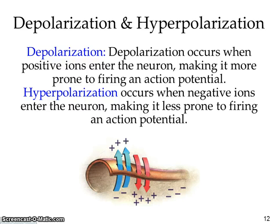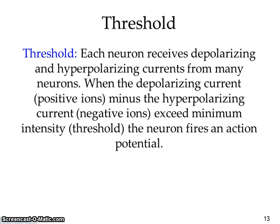Hyperpolarization is when negative ions enter the neuron, making it less prone to firing. Even though we think of 'hyper' as always ready to go, in this case it's the opposite — hyperpolarization means the neuron is less likely to fire. Threshold is when each neuron receives depolarizing and hyperpolarizing currents from many neurons; when the depolarizing currents minus the hyperpolarizing currents exceed the minimum intensity, that's your threshold, and the neuron fires an action potential. Simply: once it reaches what it needs to, it will fire.